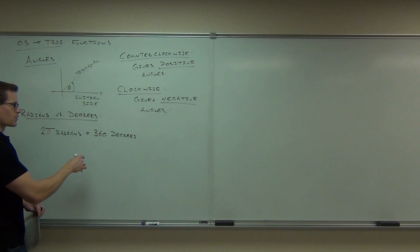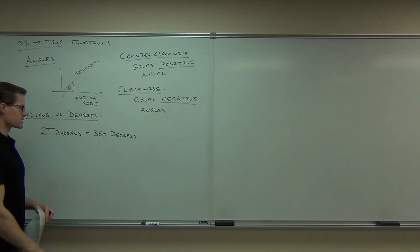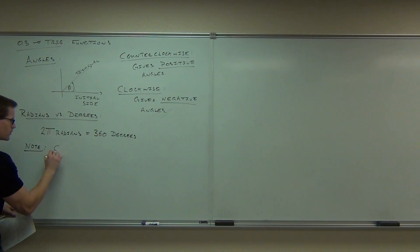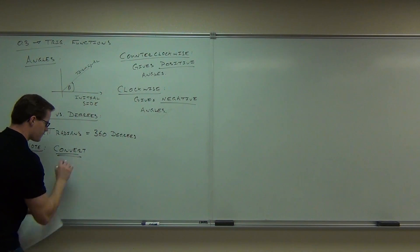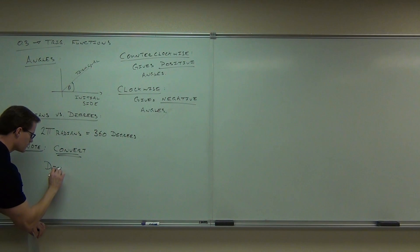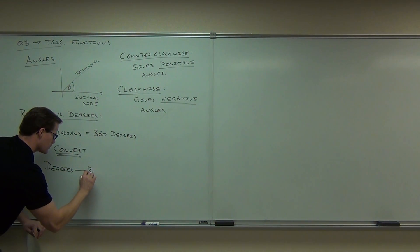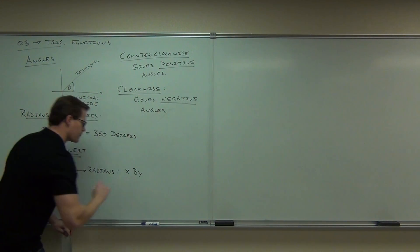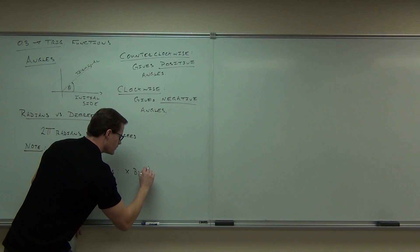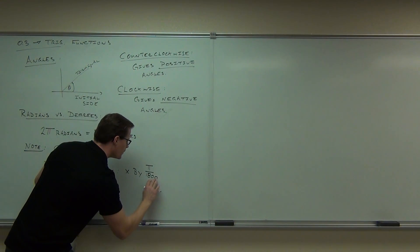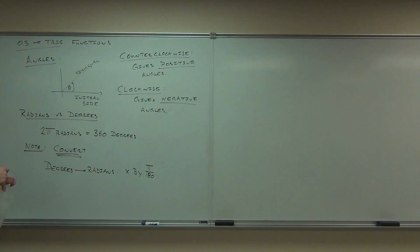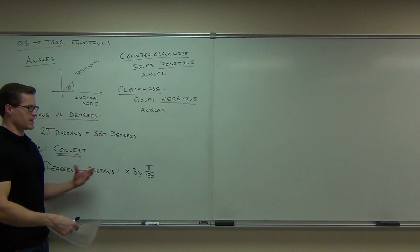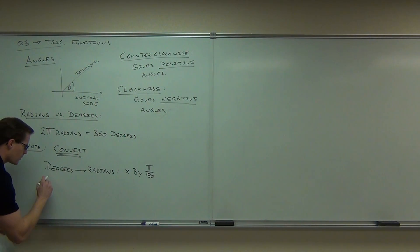So, for instance, if we want to solve for degrees, we can divide by 360. Here's our note, to convert. If you want to go from degrees to radians, multiply by pi over 180. What that's going to do is get rid of your degrees and introduce to you that pi. That's going to change into radians for you. The other way, if we want to go from radians to degrees...